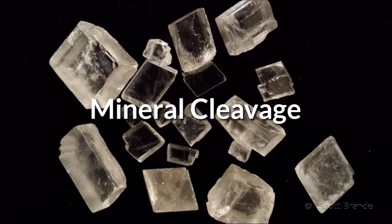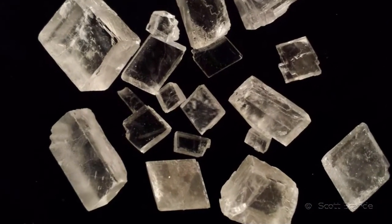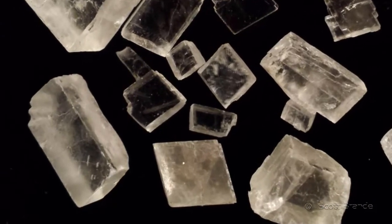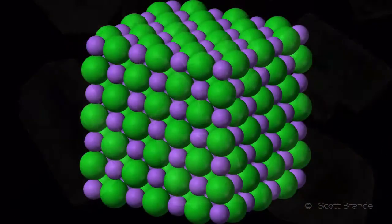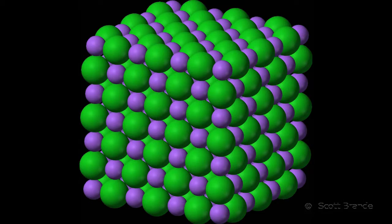One of the defining properties of minerals is their beautiful geometric crystalline form. Crystalline means that the atoms and molecules are arranged in an orderly, long-distance geometric pattern. The organization is established by the formation of chemical bonds as the solid forms.